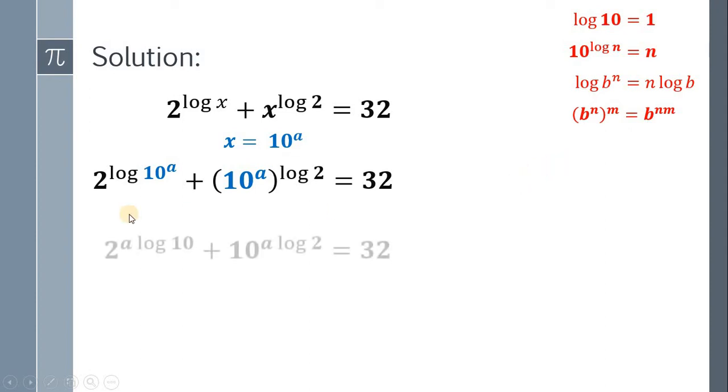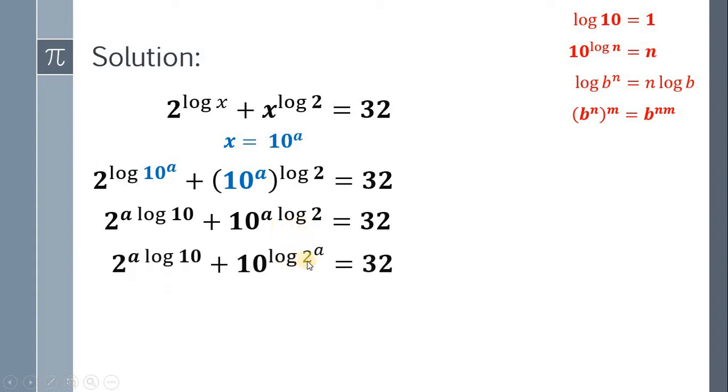Using those properties, we have 2 raised to a multiplied by the logarithm of 10 plus 10 raised to a multiplied by the logarithm of 2 equals 32. Notice this a multiplied by the logarithm of 2. It can be written as log of 2 raised to a. Notice that we have logarithm of 10. Since it is in base 10, logarithm of 10 is equal to 1.